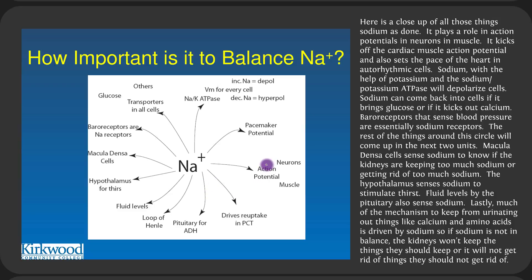Consider the homeostasis diagram for sodium: the middle is what we're trying to keep in homeostasis. On top are things that deal with too much sodium; on the bottom, when sodium is too low. Sodium plays a role in action potentials in neurons and muscle, kicks off the cardiac muscle action potential, and sets the pace of the heart in auto-rhythmic cells. The sodium-potassium ATPase will depolarize cells. Baroreceptors sensing blood pressure are essentially sodium receptors. The hypothalamus senses sodium to stimulate thirst; if sodium is out of balance, the kidneys won't keep what they should.